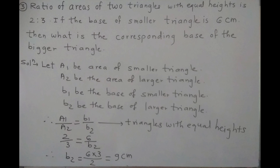Substitute the values: A1 upon A2, the ratio is given as 2 is to 3. Base of smaller triangle is 6. Base of larger triangle you have to calculate. By cross multiplication and calculation, you will get B2 is equal to 9 cm. So write the final answer: the corresponding base of the bigger triangle is 9 cm.